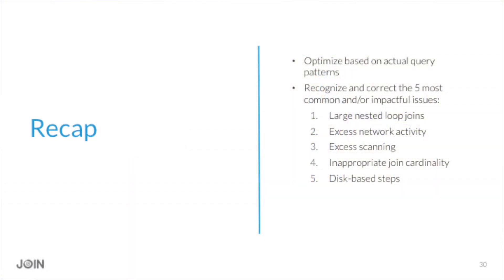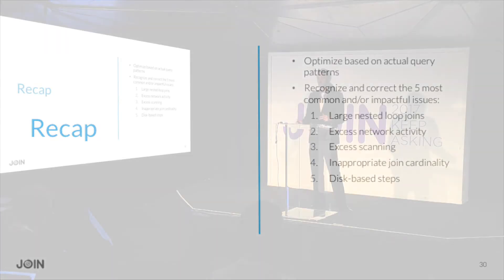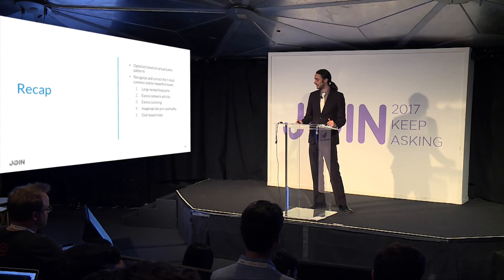To recap: with the Redshift block, you'll be able to optimize based on actual query patterns, and recognize and correct the five most common and impactful issues — large nested loop joins, excessive network activity, excessive scanning, inappropriate join cardinality, and disk-based steps.